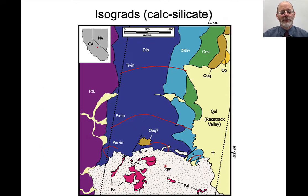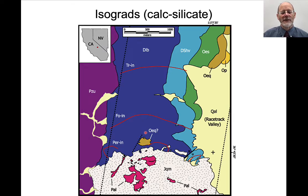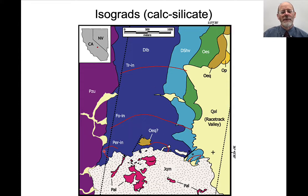This is a geologic map of the region, showing the Ubehebe Peak pluton and the different sedimentary units that abut the intrusion. We see different mineral isograds here. 'Tremolite in' means tremolite is present in this region but not that region. 'Forsterite in' — forsterite is the magnesium end-member olivine — means forsterite is present in this region but not that one. 'Periclase in' means periclase is present in these areas but not others. That's what an isograd is: the first appearance in the field of a distinctive mineral — the tremolite-in isograd, the forsterite-in isograd, the periclase-in isograd.